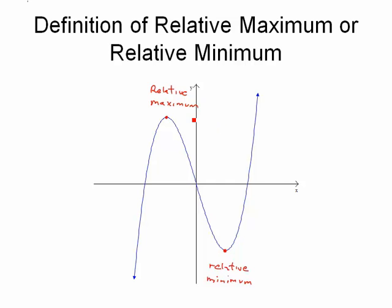For instance, if we look at this relative maximum, is this the very highest point on the graph? Well, since the graph continues to go up on the right hand side, it's not the very highest point.